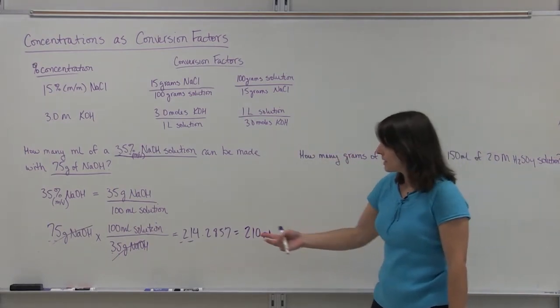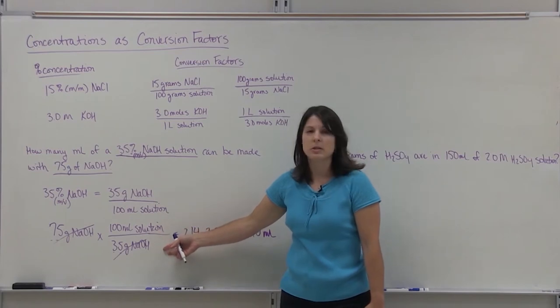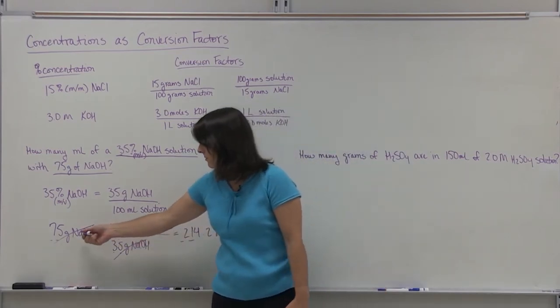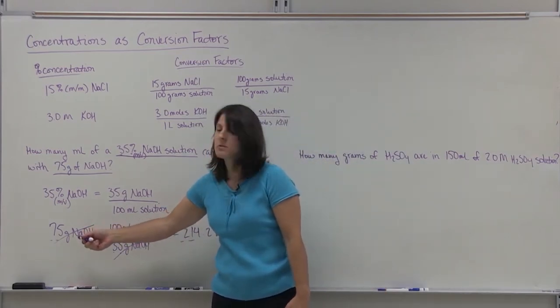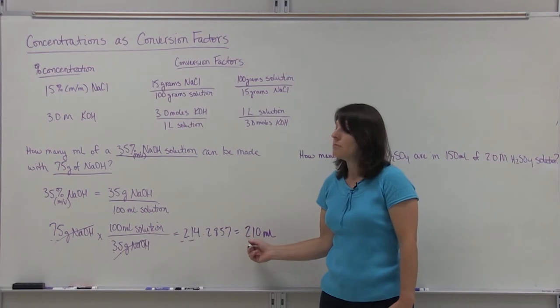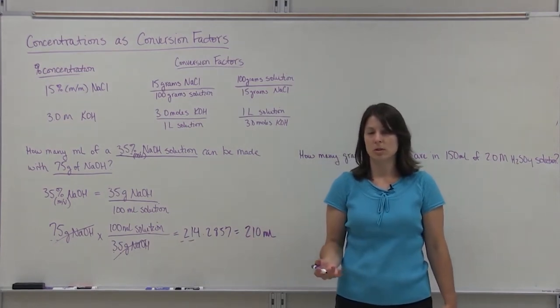Your answers to a math problem have to be expressed in the correct number of significant figures. We have two significant figures in 75 and two in 35. The 100 is considered exact, so we don't count significant figures for that. Our answer can only have two significant figures, so I'm going to round this to 210 milliliters of solution. That's how we used our percent concentration as a conversion factor to convert from grams of sodium hydroxide to milliliters of the whole solution.